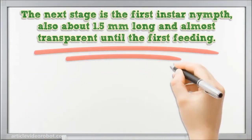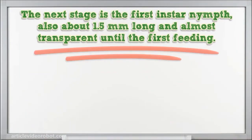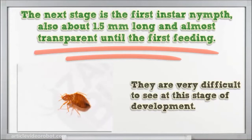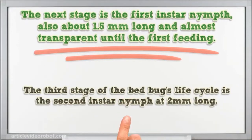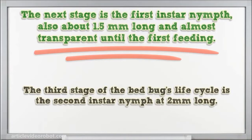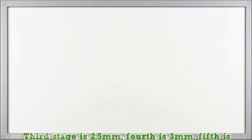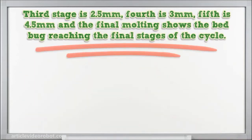The next stage is the first instar nymph, about 1.5 mm long and almost transparent until the first feeding — they are very difficult to see at this stage. The third stage is the second instar nymph at 2 mm long. The third stage is 2.5 mm, the fourth is 3 mm, the fifth is 4.5 mm, and the final molting shows the bed bug reaching the final stages of the cycle.